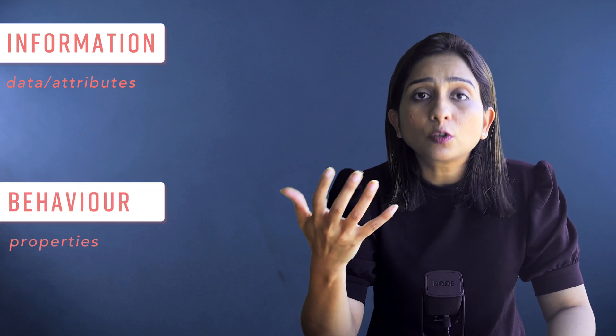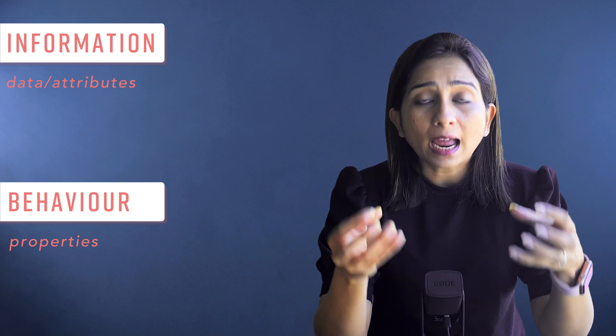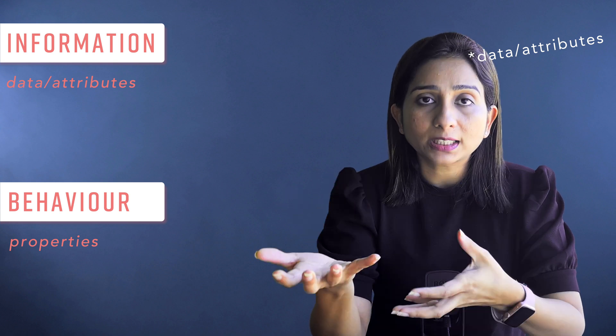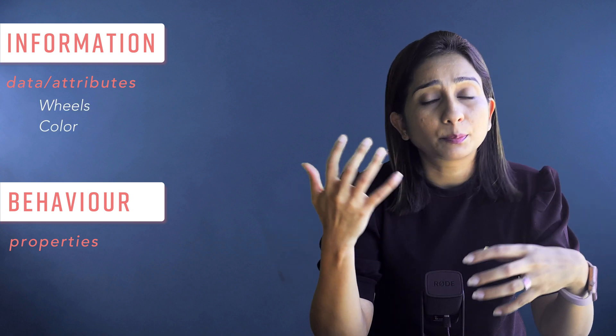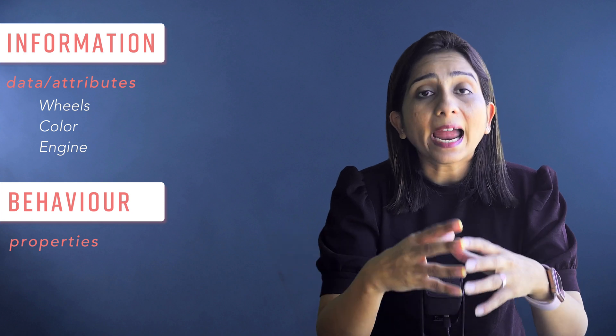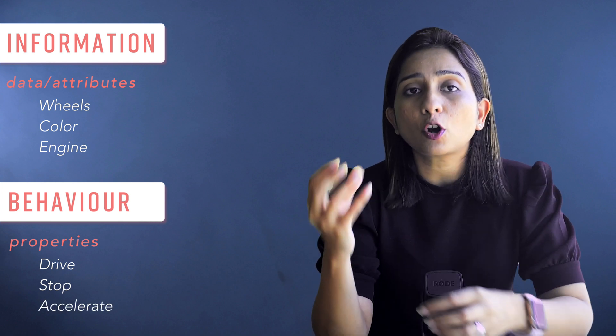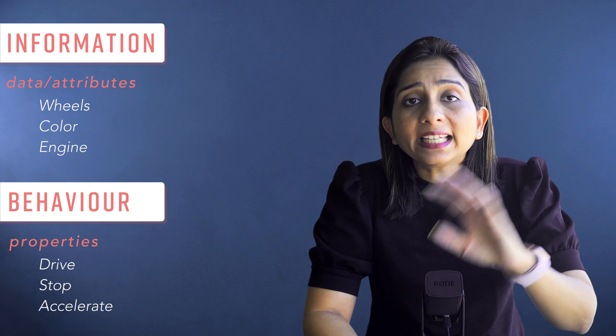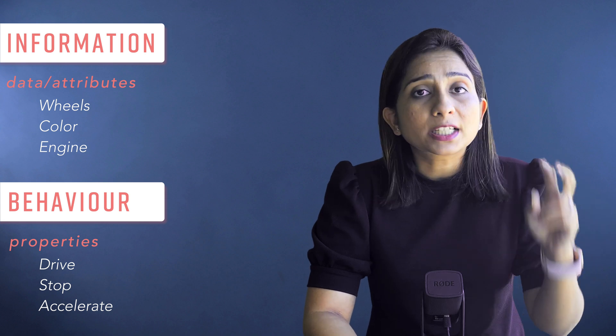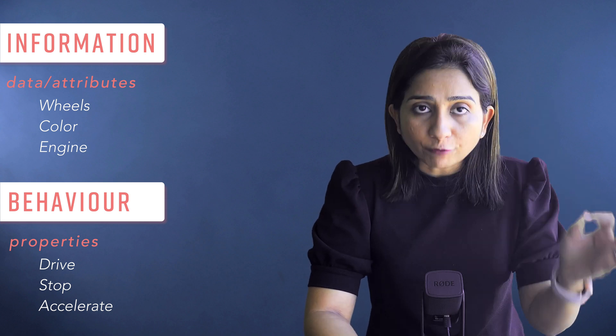An object comprises two things: information, which we call data or attributes, and behaviors, which we call the behavior or properties of the object. For example, a car is an object. Its properties are that it has four wheels, some color, and a particular kind of engine. The behavior of the car is that it can drive or stop. Any real world entity which has information and certain behaviors can be classified as an object.